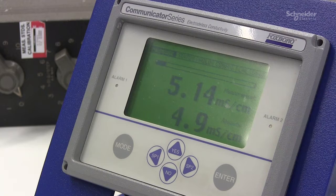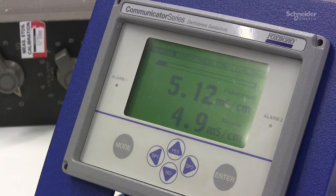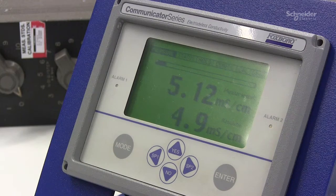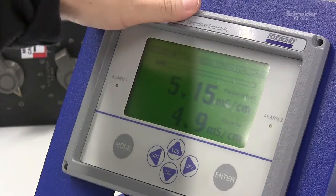In this video we will show how to perform a two-point calibration for an A71EC SP sensor using an A75EC analyzer.